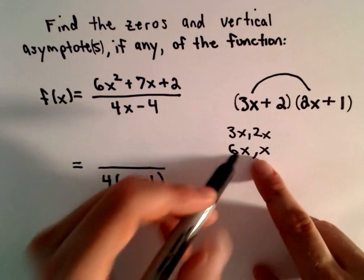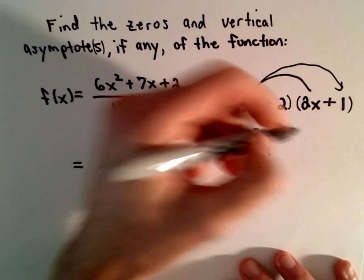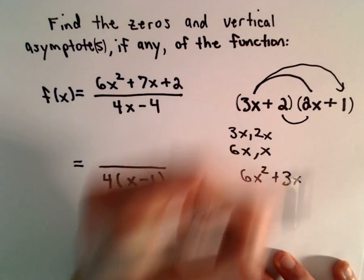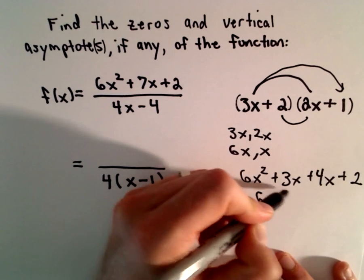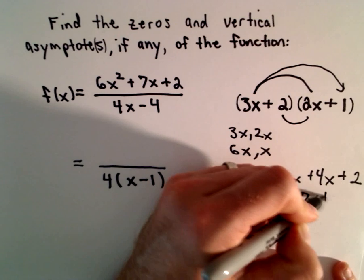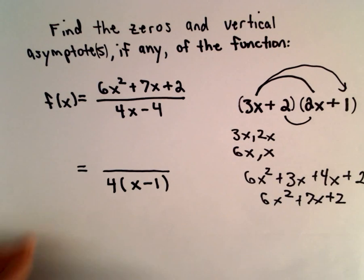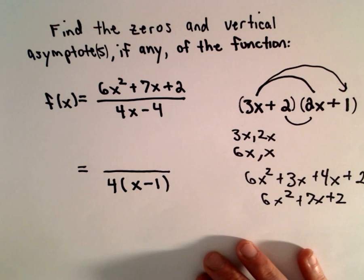If we distribute, we'll get 3 and 2, which will give us our 6x². 3x times positive 1, we're getting 6x² plus a positive 3x. 2 times 2x is 4x, 2 times 1 is 2. That's going to give us 6x² + 7x + 2. And that's what we started with. So that seems to be the correct factorization to me.